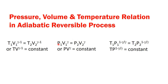Now the relation between pressure and volume: P1 V1 to the power gamma is equal to P2 V2 to the power gamma, so PV to the power gamma is constant. The relation between temperature and pressure: T1 P1 to the power (1 minus gamma)/gamma is equal to T2 P2 to the power (1 minus gamma)/gamma, so T·P to the power (1 minus gamma)/gamma is constant. Now let's apply these relations to solve the problems.